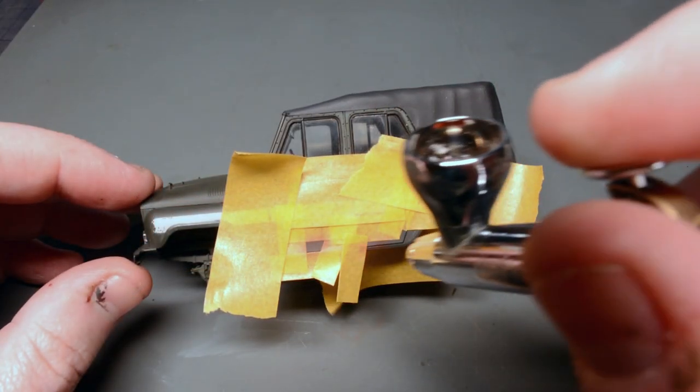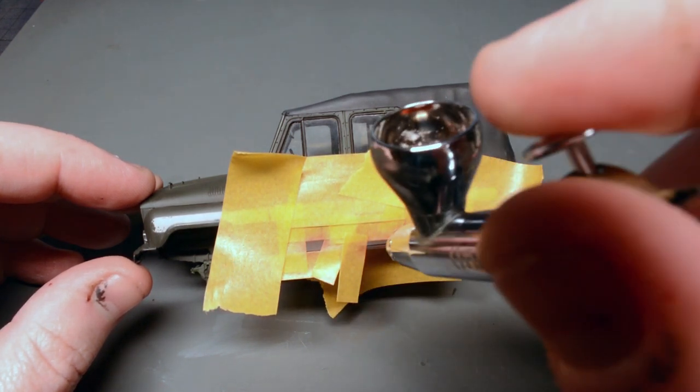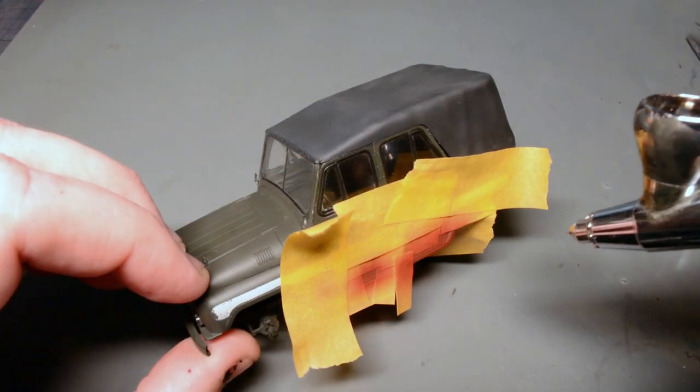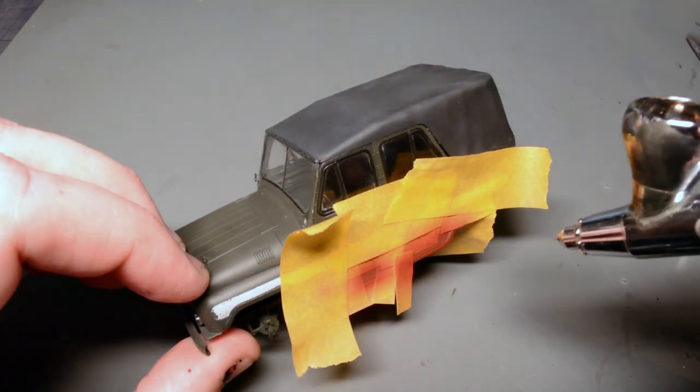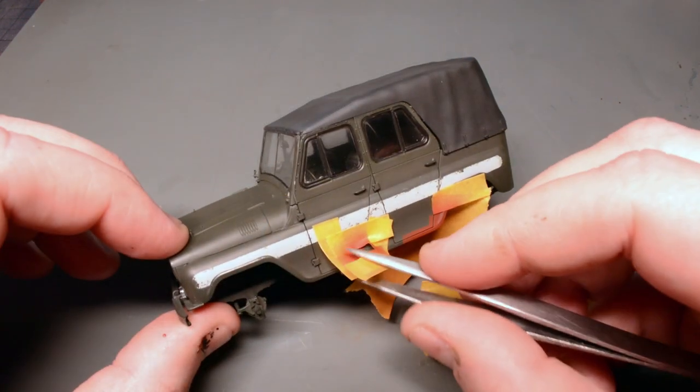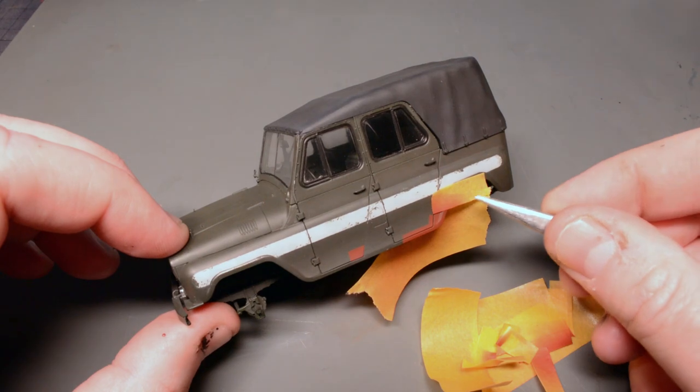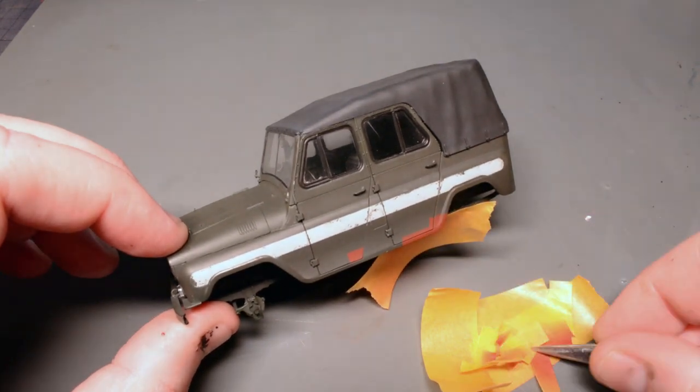I had a bit more masking to do after that as in the game it looks like the civilian owners have added a bit of red oxide primer. I mixed some Citadel Mephiston Red and Gorthor Brown to a rough red oxide colour and masked off and airbrushed this on. Once this was peeled off I had to repeat the process a couple more times in various areas but all in all that was the overall painting complete.